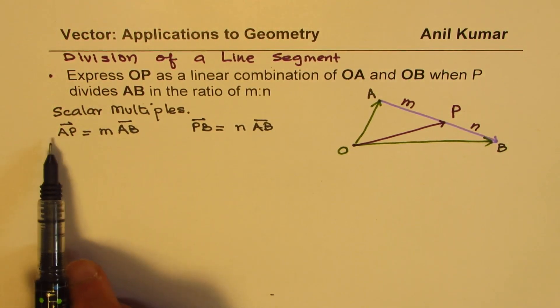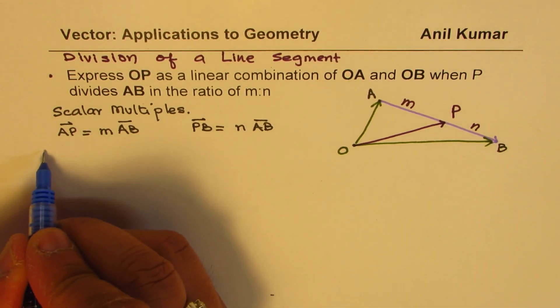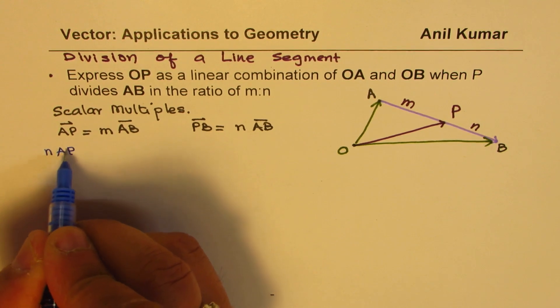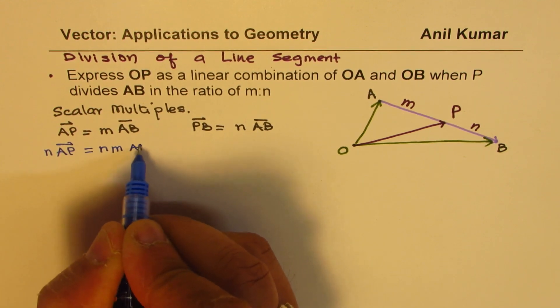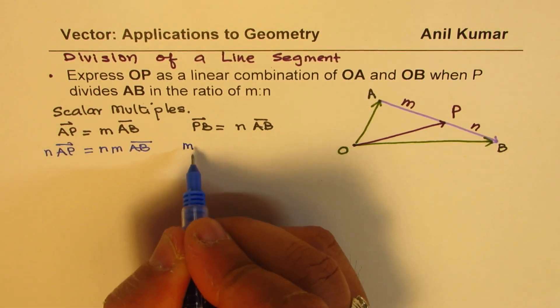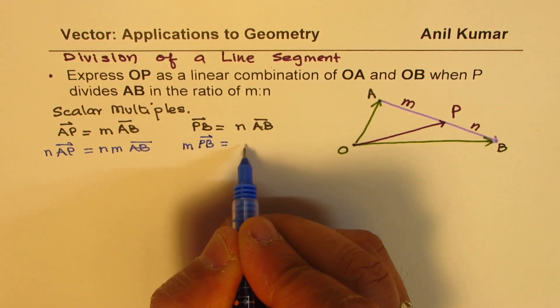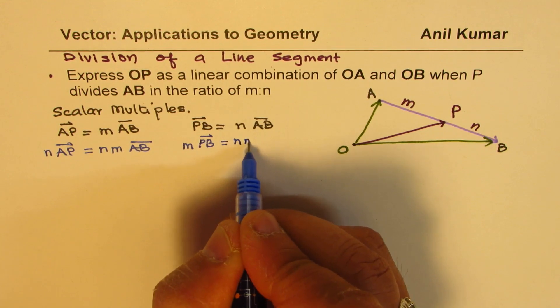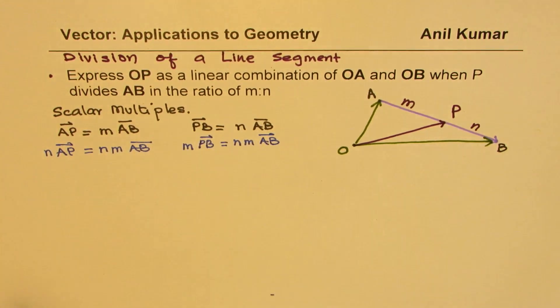If I multiply this by N and that by M, what do we get? If I write N times AP, I am multiplying this by N, then I get NM AB. Here, if I multiply this by M, I get M times PB will be equal to NM AB. Do you see both become equal?